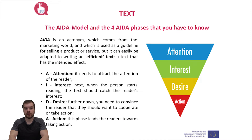The AIDA model. AIDA is an acronym which comes from the marketing world and is used as a guideline for selling a product or a service, but it can be easily adapted to writing an efficient text — a text that has the intended effect. Mostly, the text we develop wants the readers to take action. A text or publication should lead the reader through four AIDA phases. A — Attention: it needs to attract the attention of the reader. This can be done in a visual way, being creative, using uncommon formats, and with an attractive, funny or appealing title or picture on the cover.